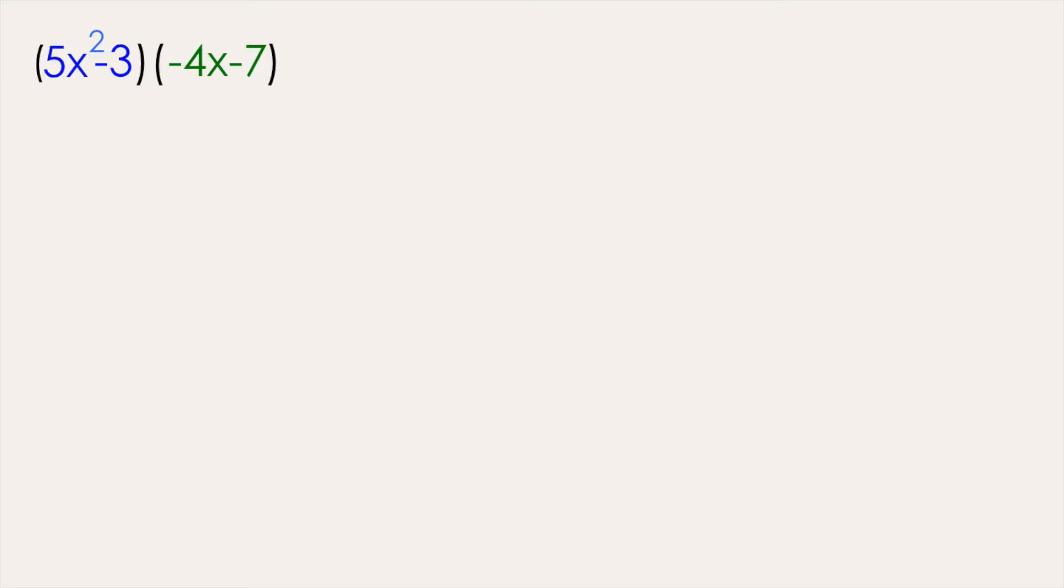Let's do another example problem. Here we're multiplying the two binomials, 5x squared minus 3 times negative 4x minus 7, and start by separating our first binomial, 5x squared and negative 3.